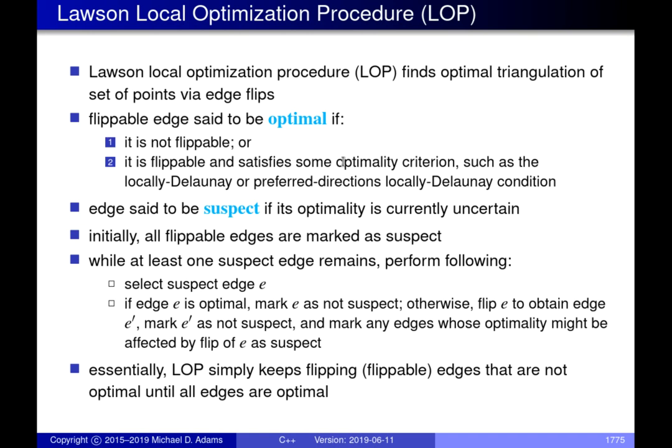If we don't know whether an edge is optimal with respect to the criterion being used, we say the edge is suspect. Suspect simply means the optimality of the edge is uncertain — we need to test it before drawing any conclusion. The algorithm starts with a list of all suspect edges: all edges we are not sure are locally Delaunay that we need to test.